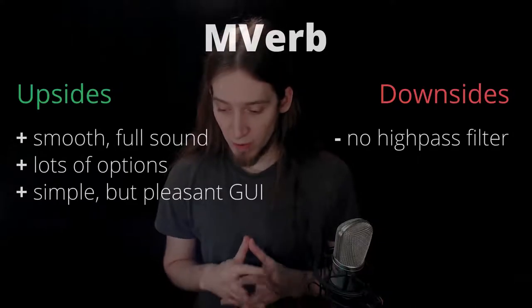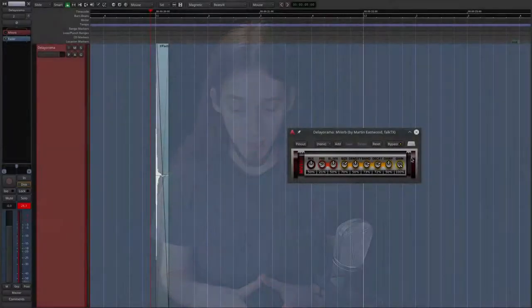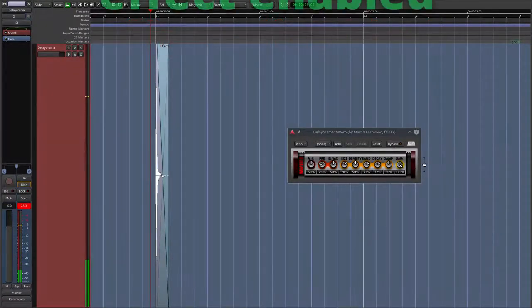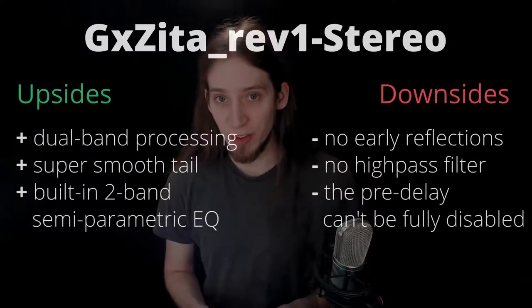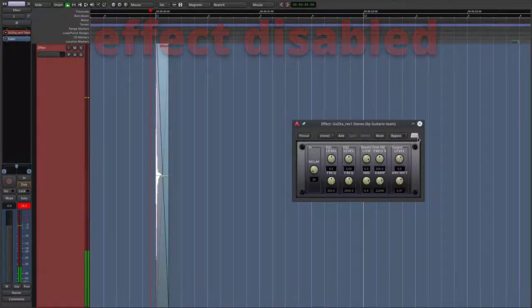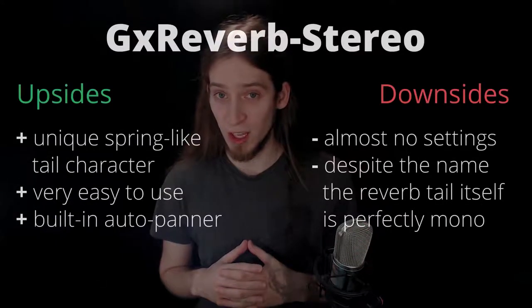Reverbs. Mverb is my favorite right now. Its sound is full and smooth without that strange tinny character that many synthetic reverbs have. It's also very flexible and it looks nice. GX Zita Rev 1 Stereo — this is a GuitarX interface to the famous Zita Reverb by Fons Adriaensen. It sounds awesome, it's quite flexible, but it won't replace Mverb for me because you can't make it small enough. GX Zita Reverb Stereo — this one sounds a lot like a spring reverb, which is very rare among synthetic reverbs. It sounds nice on drums and guitars, so there's not much to set up here.